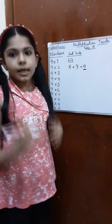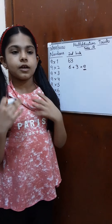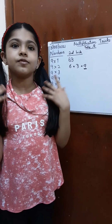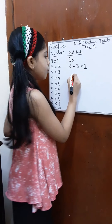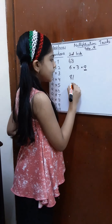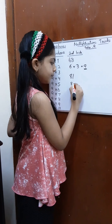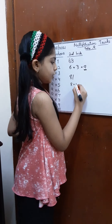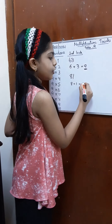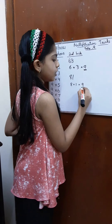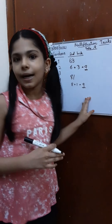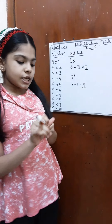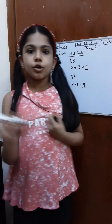Same way, if I ask you if 81 is a multiple of 9, take the number 81, split it into 2 digits, then add them. If you get 9, it's a multiple of 9. We got 9, so it is a multiple of 9. This trick was also easy and so quick.